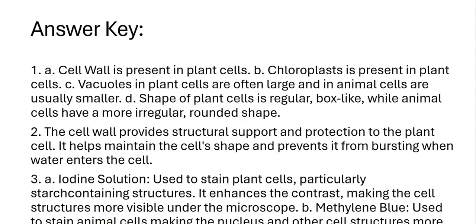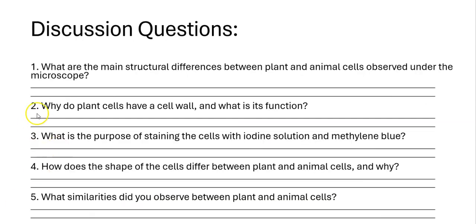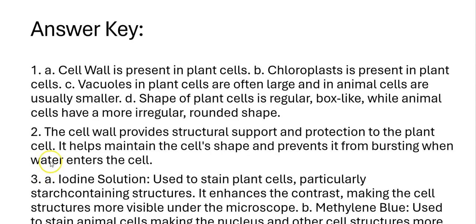Second question: why do plant cells have a cell wall and what is its function? The cell wall provides structural support and protection to the plant cell. It helps maintain the cell's shape and prevents it from bursting when water enters the cell.